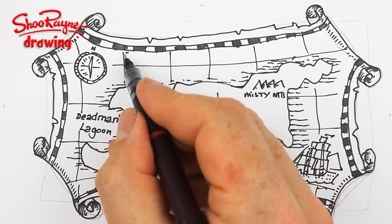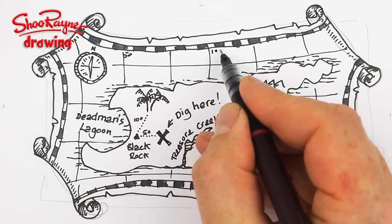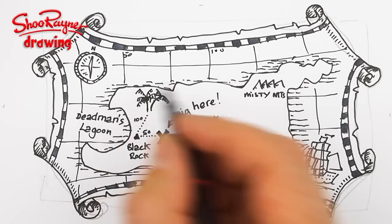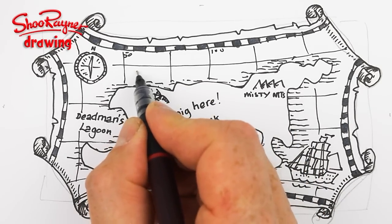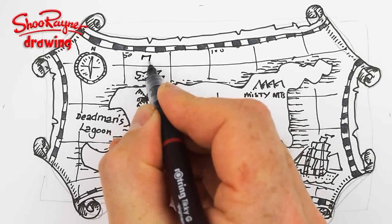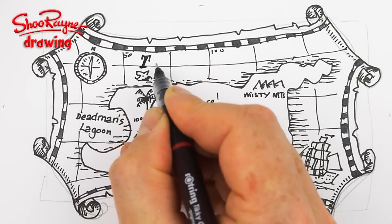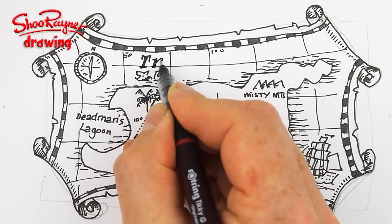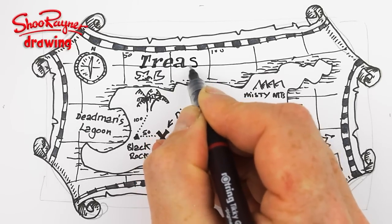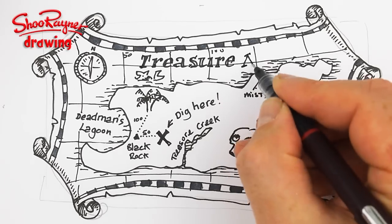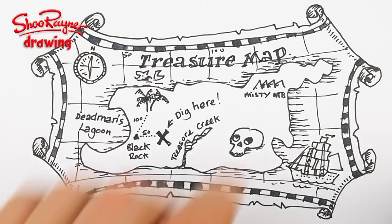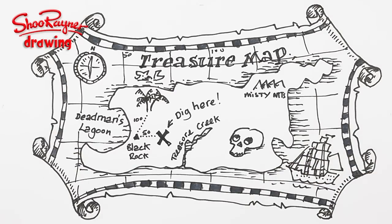You can maybe put 50, 100, something like that on there. And you might want to put some little fish. So that we know what kind of a map it is, I want to put the word treasure. When you're done, erase the pencil lines and there you have your treasure map.